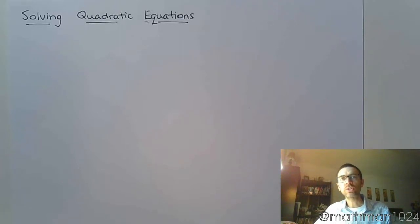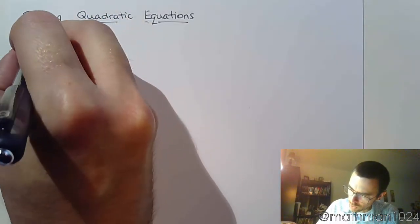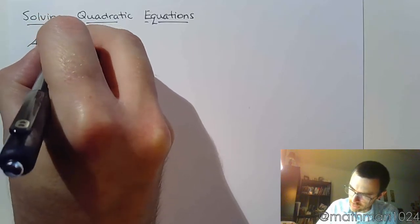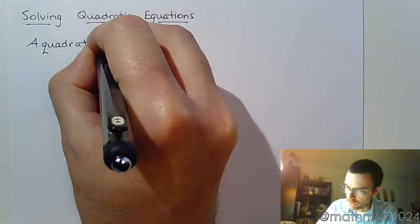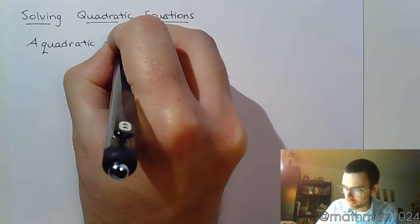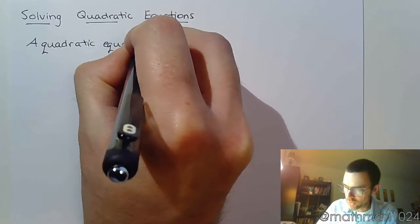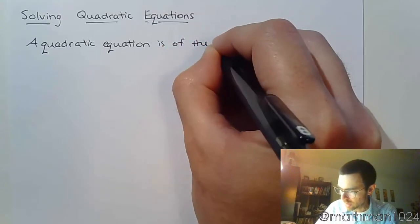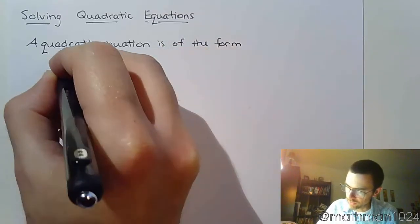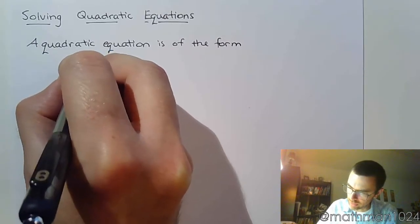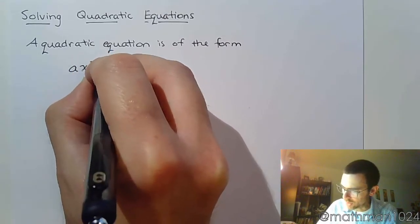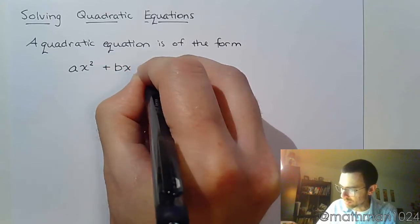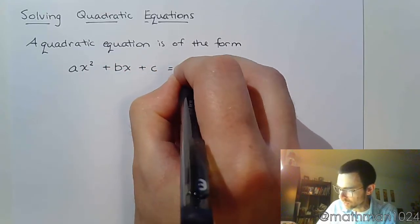This video begins our discussion on solving quadratic equations. So, what is a quadratic equation? A quadratic equation is an equation of a particular form: ax² + bx + c = 0.